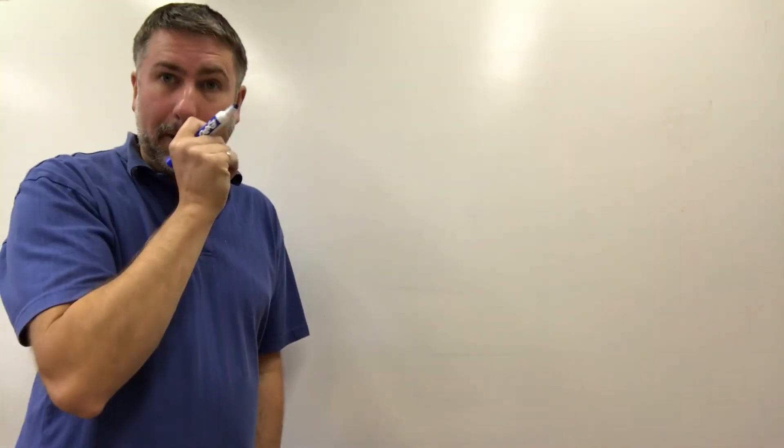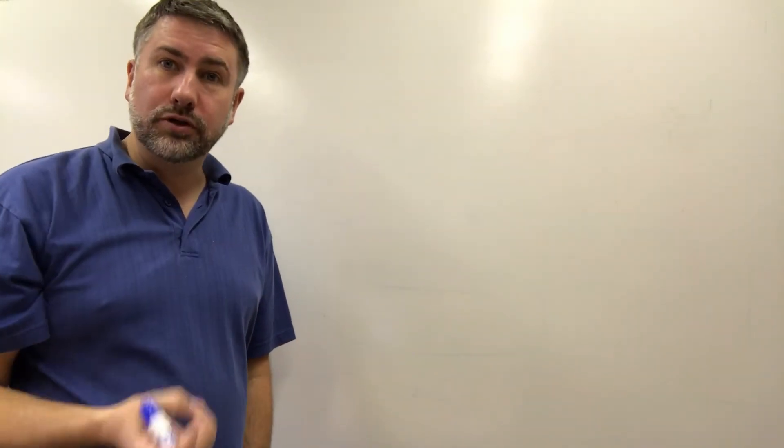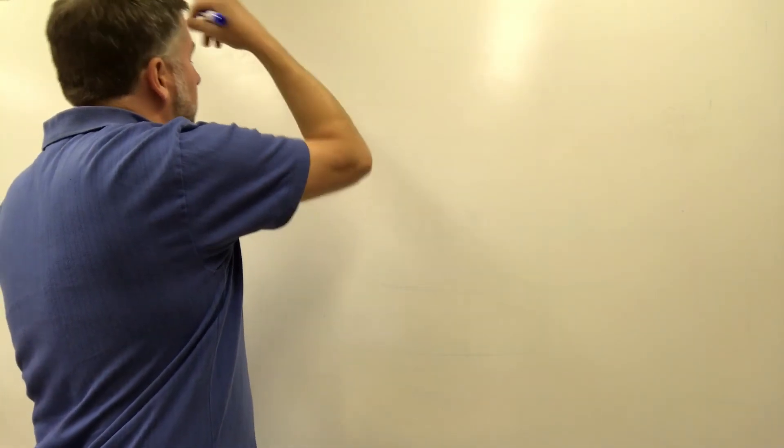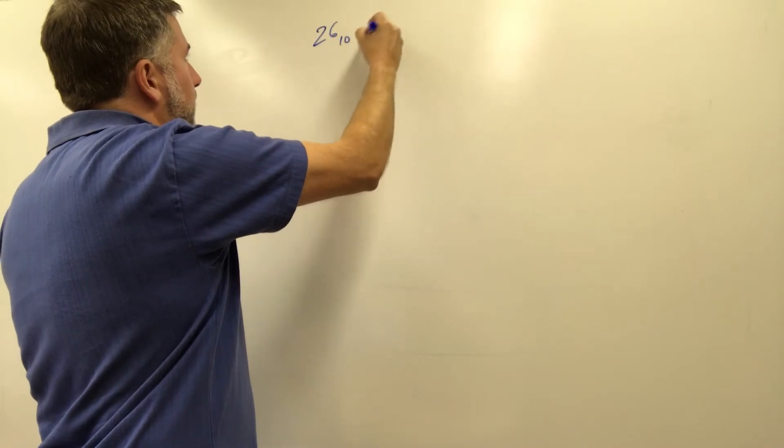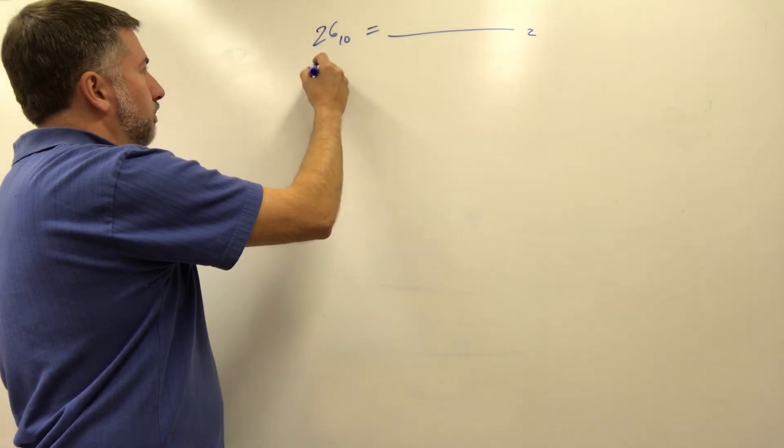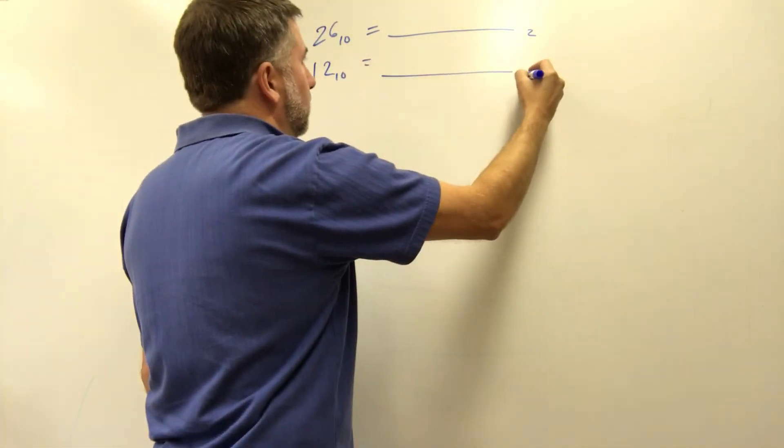We'll just get started with decimal and binary. So I will give you some numbers and you will convert them from base ten to base two or from base two into base ten to know for sure that you can do these things. So let's see. We'll do 26 in base ten equals what in base two? We'll do 12 in base ten equals what in base two?